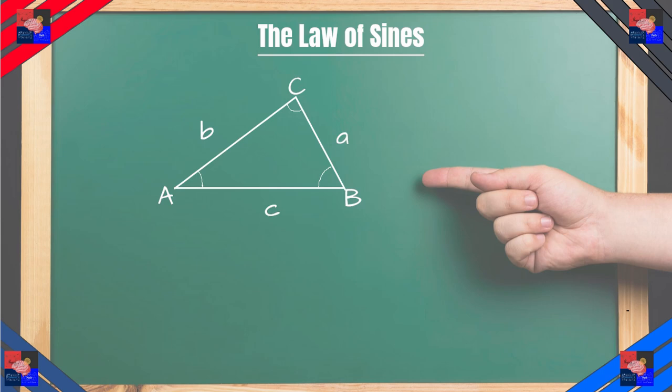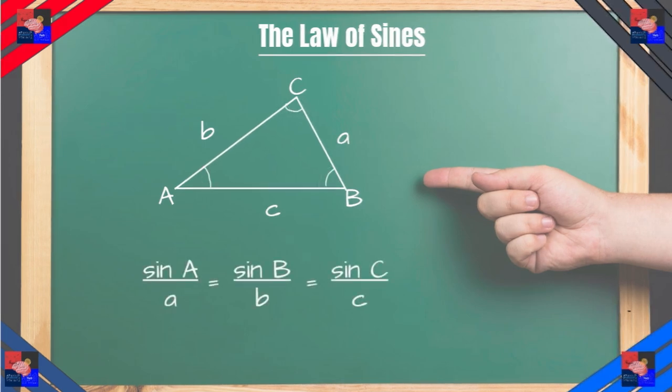For this triangle, sine of A over a is equal to sine of B over b which is equal to sine of C over c. And using this law we can plug in things we know to work out things we don't know about this triangle. But how? How do we solve for the values we're trying to find out?